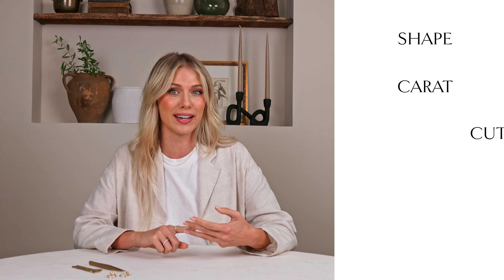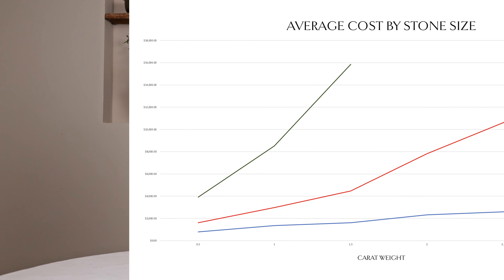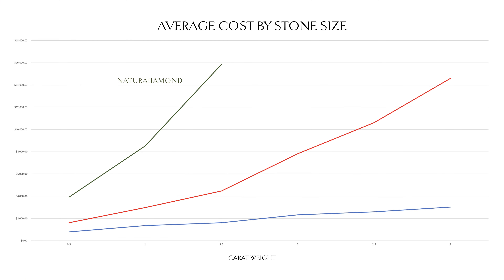When it comes to pricing, moissanites have a significantly lower price when compared to diamonds of equal size. Moissanite typically varies in price based on size, whereas diamond prices vary based on shape, carat, cut, color, and clarity. Since lab diamonds are manufactured in a lab, they are significantly more affordable than a natural diamond, while keeping all the physical and chemical properties of a mined diamond.